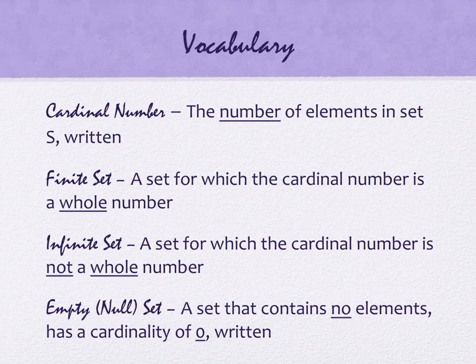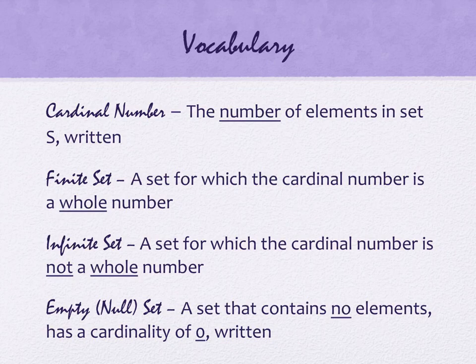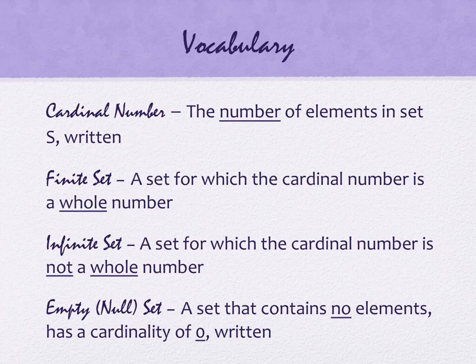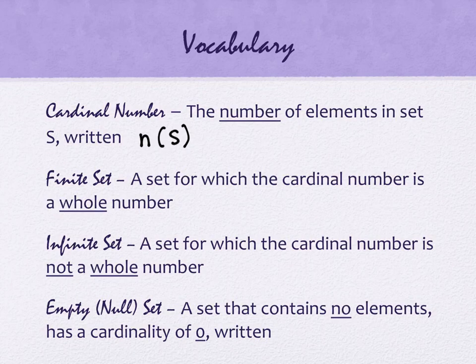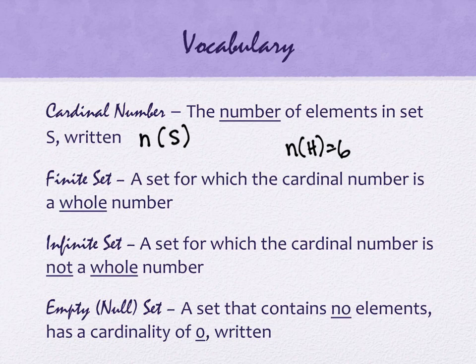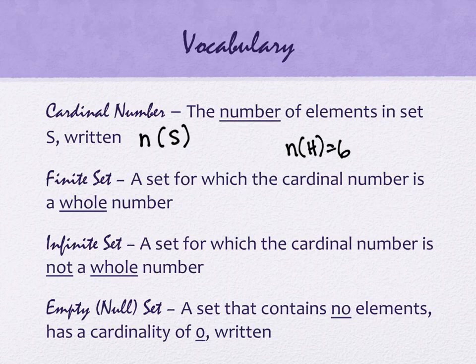A little bit more vocabulary. Cardinal number. Cardinal number means the number of elements in the set, and it's written N of whatever the set is. Our set here is called S. So if you wanted the number of elements in the hands household, like that live in my household right now, we would say that N of H equals six. There are six people living there. If we wanted the number of people in this room right now, I've got two, four, six, eight, ten, twelve, I'm thirteen. We would be N of math 1203 equals thirteen. That's how many people are in this room right now.